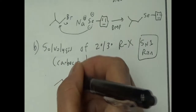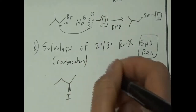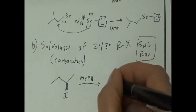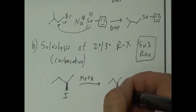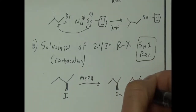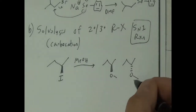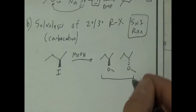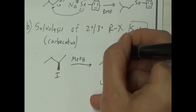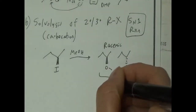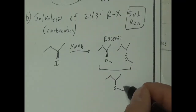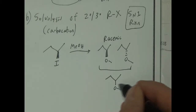For example, a secondary substrate with a good leaving group and a terrible nucleophile like methanol would give a mixture of enantiomers — a racemic mixture. I sometimes abbreviate that by drawing a line without any stereochemistry, which implies a racemic mixture. On a quiz, if I ask you to draw all enantiomers, you'd draw both.